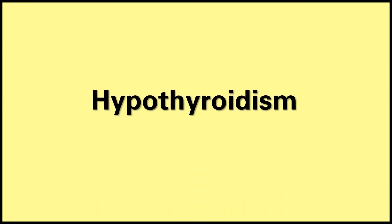Now let's move on to hypothyroidism, which occurs when there is a deficit of thyroid hormone. The most common cause in pediatrics is Hashimoto's thyroiditis. There's also a congenital form called cretinism, which presents with macroglossia, hoarse cry, coarse facial features, and is one of the leading causes of intellectual disability in the world. Hashimoto's disease occurs when the immune system produces antithyroid peroxidase antibodies. Thyroid peroxidase plays a critical role in T3 and T4 synthesis, so inhibiting it decreases production of thyroid hormones.